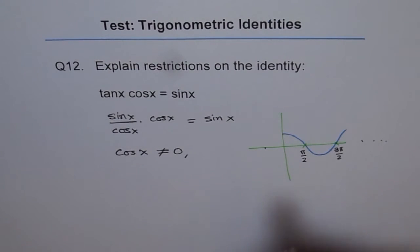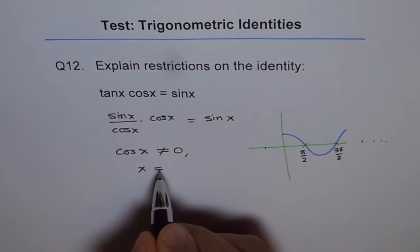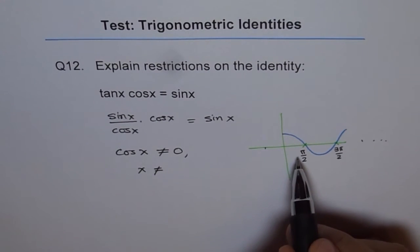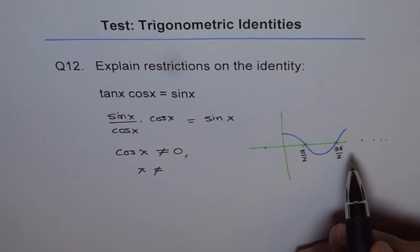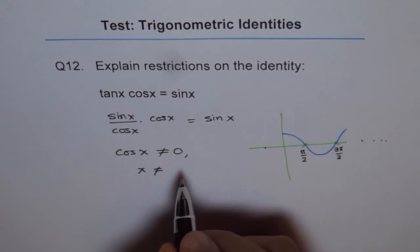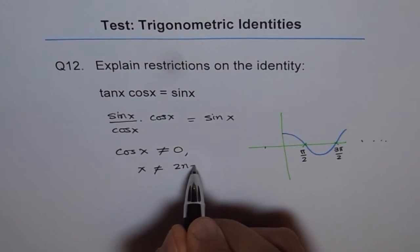So in general, we can write that x is not equal to, so these are odd numbers, right? 1, 3, 5, 7 plus and minus. So we could write this as 2n plus 1.